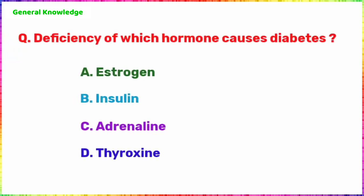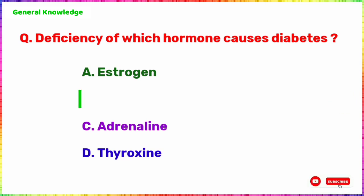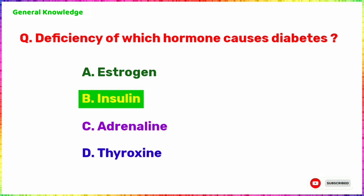Deficiency of which hormone causes diabetes? The correct answer is Option B, Insulin.